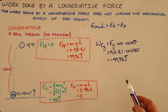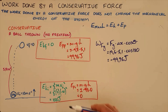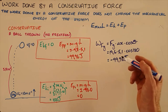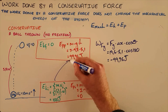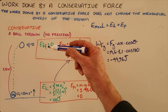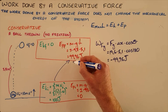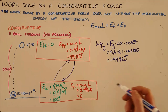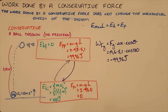Gravity does negative work on the object, which we associate with energy being removed from the system — but because gravity is a conservative force, that energy is merely transformed from kinetic to potential energy, not lost. If the object continues, the potential energy decreases as kinetic energy increases as it falls back. This leads to the conservation of energy: in the absence of non-conservative forces, the initial mechanical energy equals the final mechanical energy.